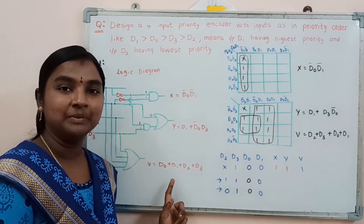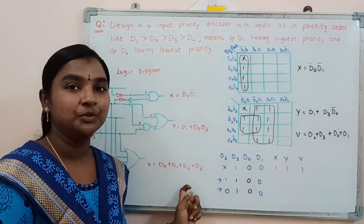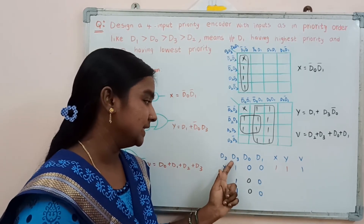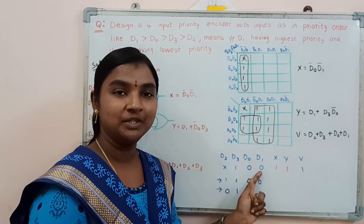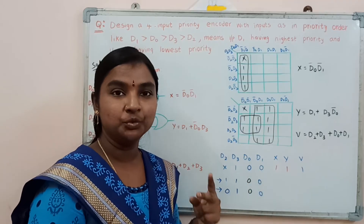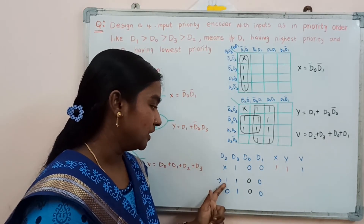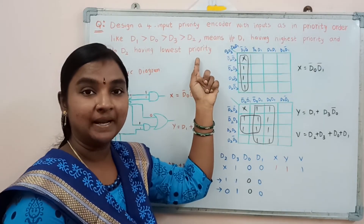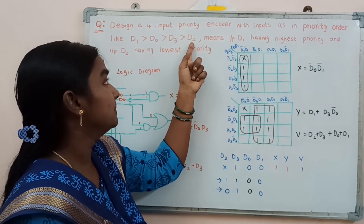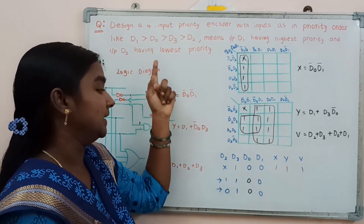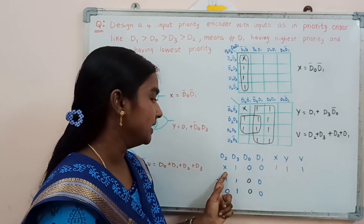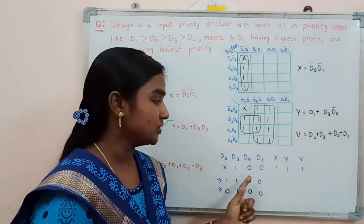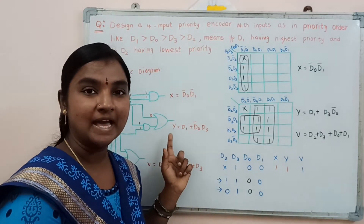Now we will verify one combination from the truth table using this logic diagram. Consider d2 equals don't care, d3 equals 1, d0 equals 0, d1 equals 0. We consider two sub-cases by setting d2 equal to 1 and d2 equal to 0. As per the priority order, d2 has the lowest priority and d1 has the highest priority, so we use the binary code for d3 input, which is 1, 1.